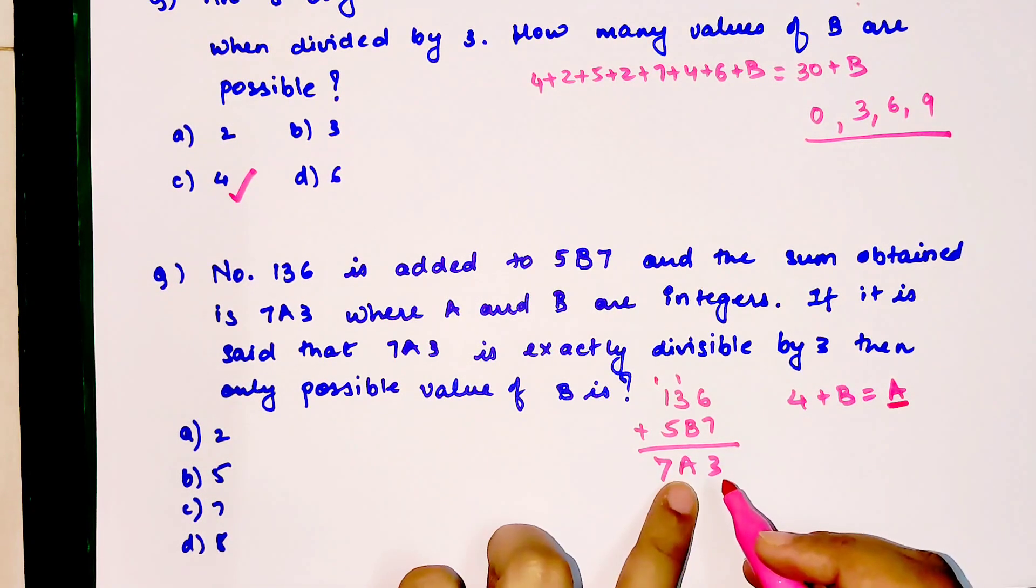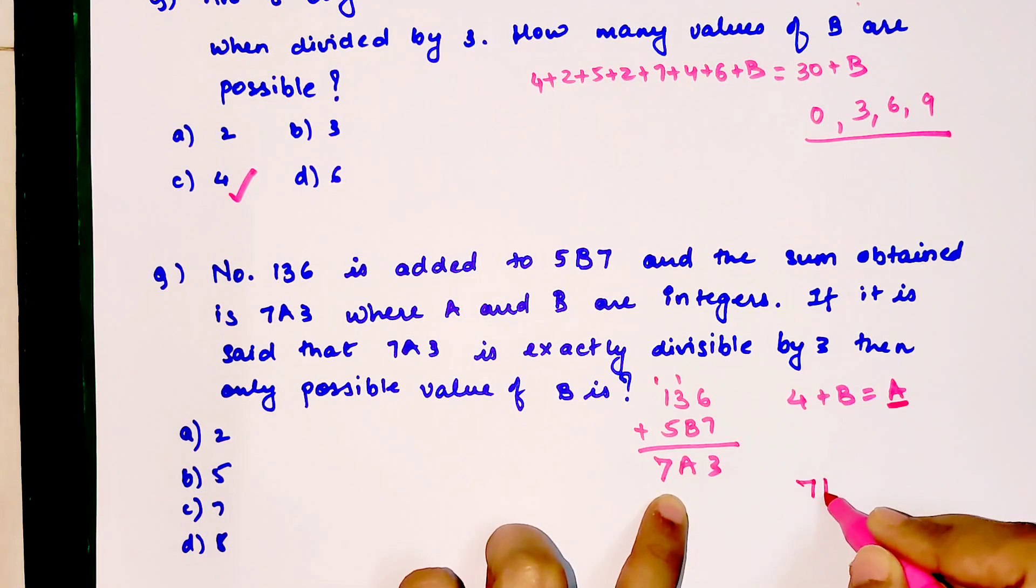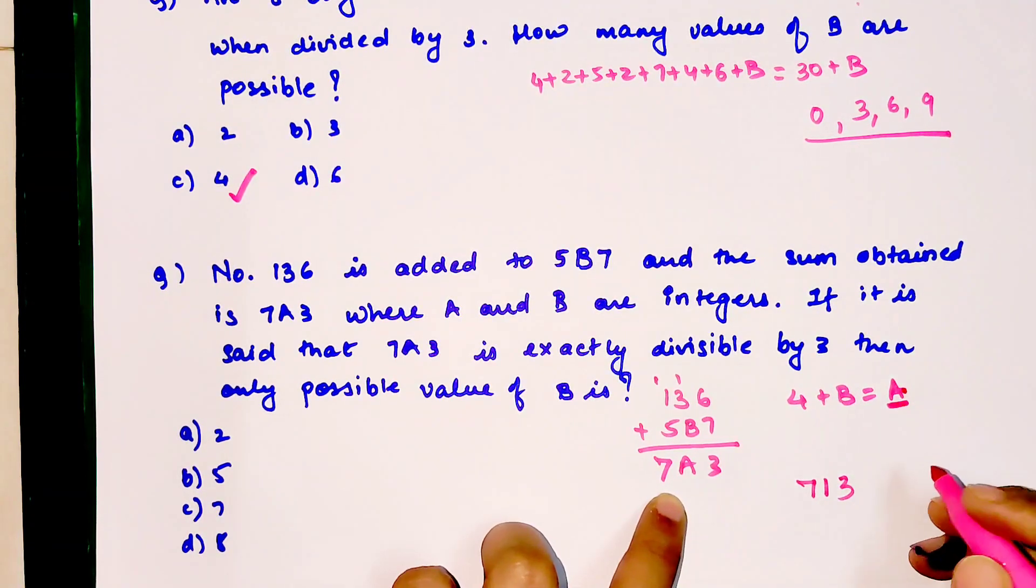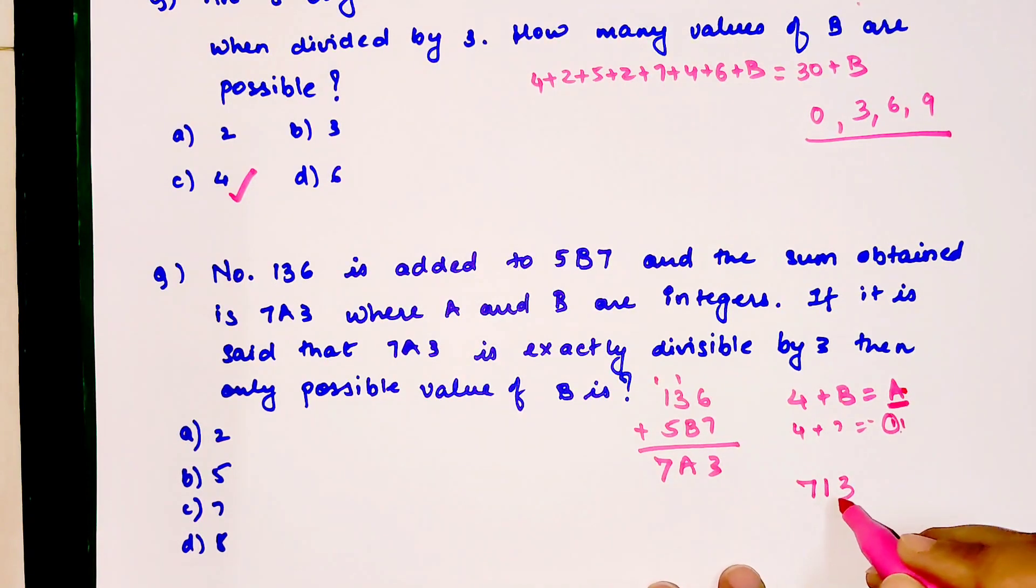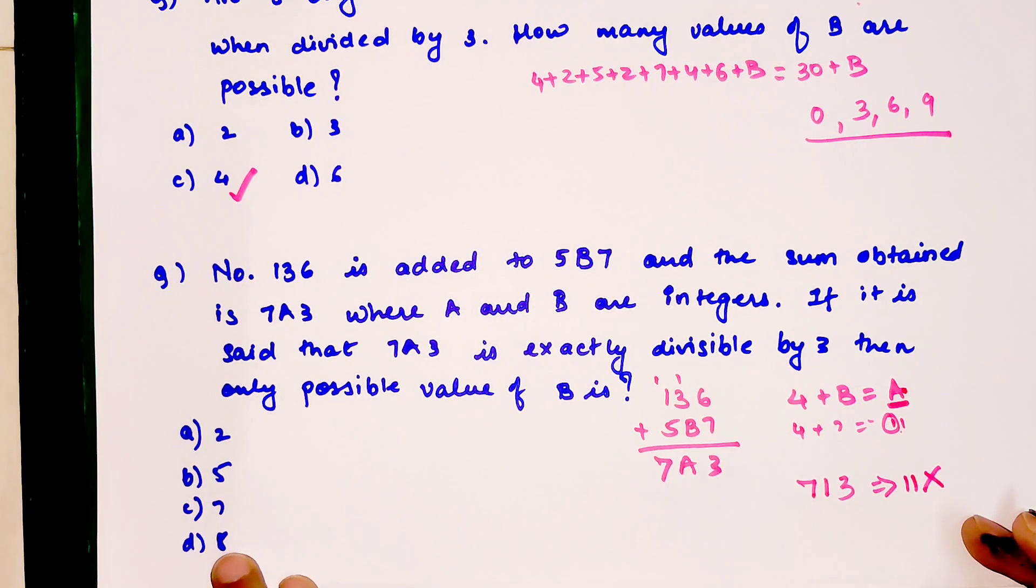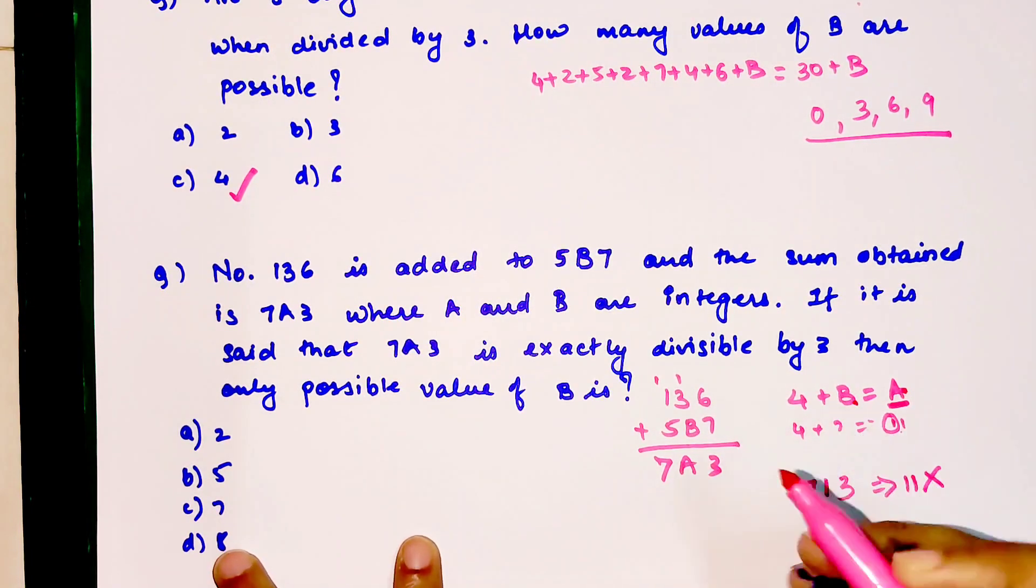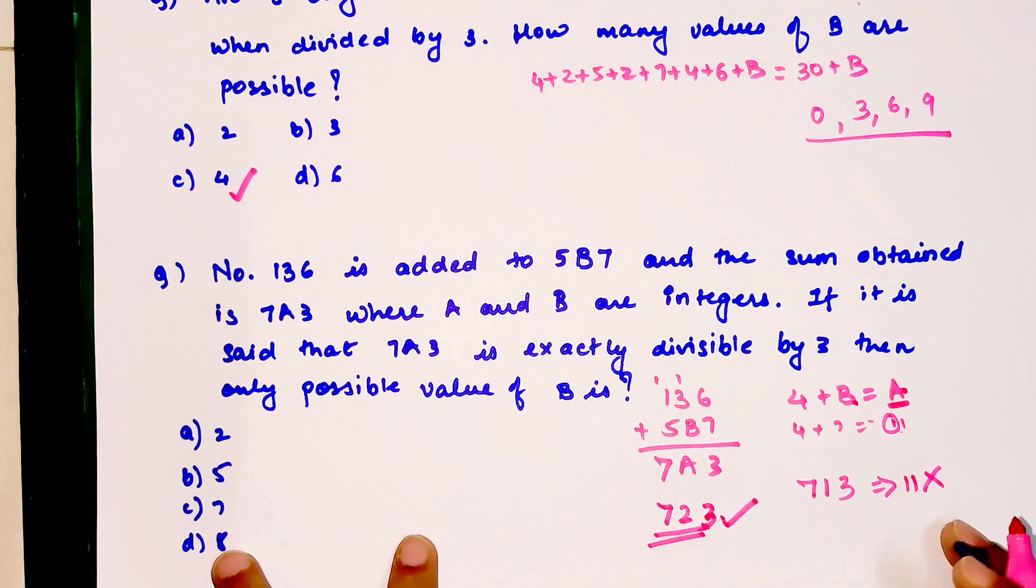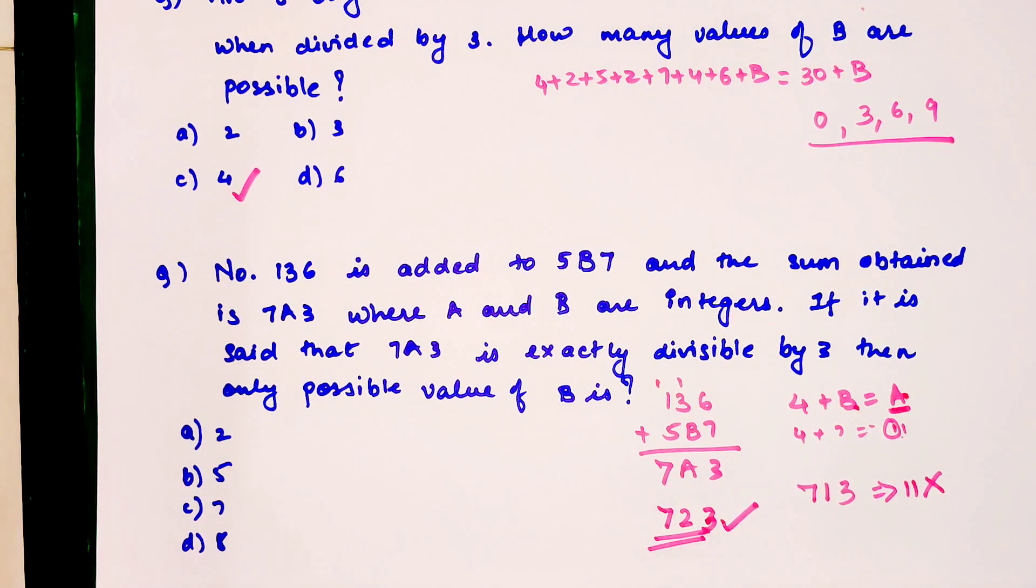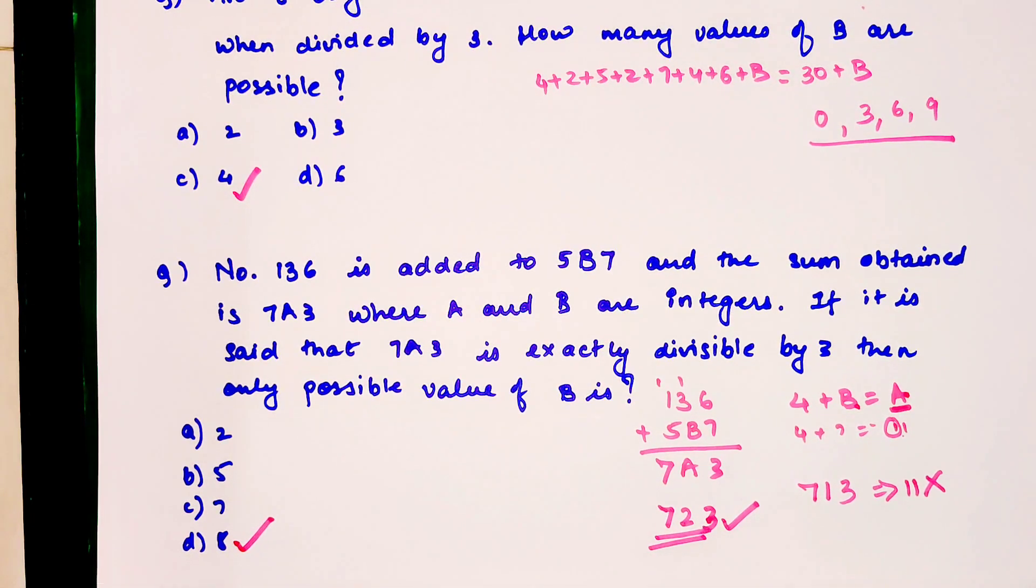Put the values of B. I want a two-digit answer. If I try 7, 4 plus 7 gets you 11, and 1 carries over so A becomes 1. But 7 plus 2 plus 1 equals 10, which is not divisible by 3. Check for 8: 4 plus 8 gets you 12, so the answer is 723, which is completely divisible by 3 because 7 plus 2 is 9 plus 3 is 12. The answer is option D.